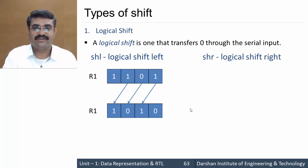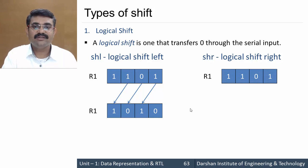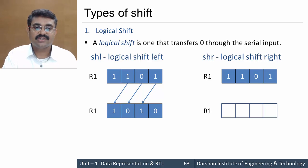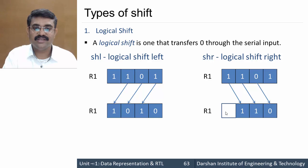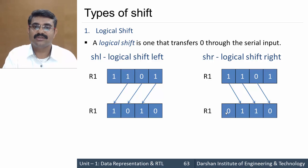Similarly, for logical shift right, bits are shifted to the right by one position. The LSB is discarded, and as per the definition of logical shift, a zero is transferred through the serial input at the MSB position. This is logical shift right.